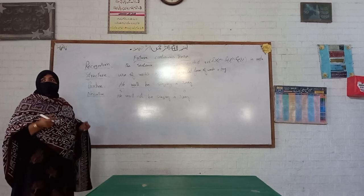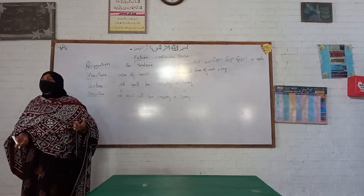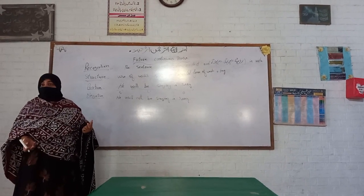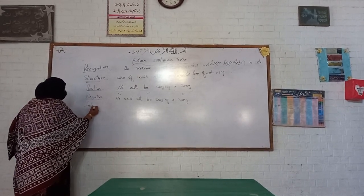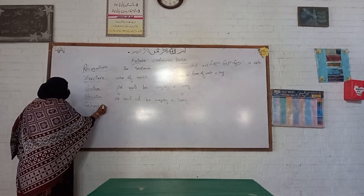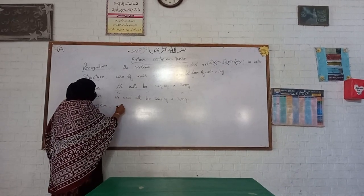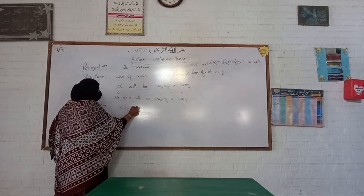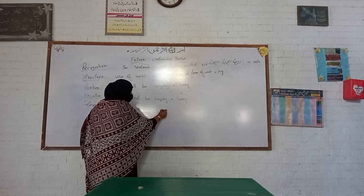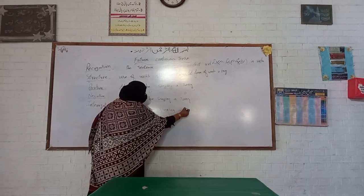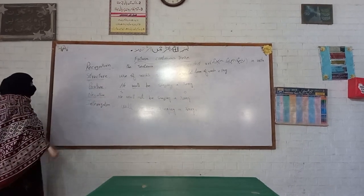For interrogative sentences, that will be again very easy. We just use 'will' or 'shall' at the start of the sentence, and at the end of the sentence we use a question mark. So: 'Will he be singing a song?' — will at the start, question mark at the end.